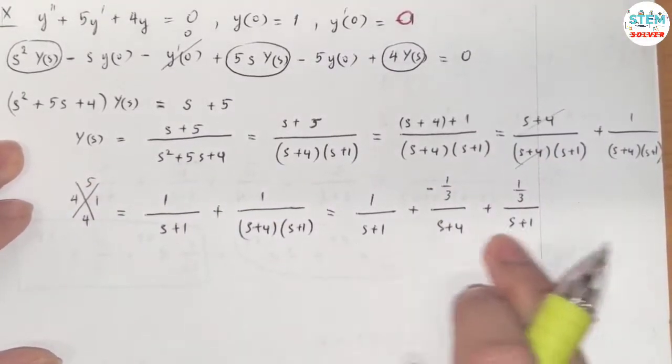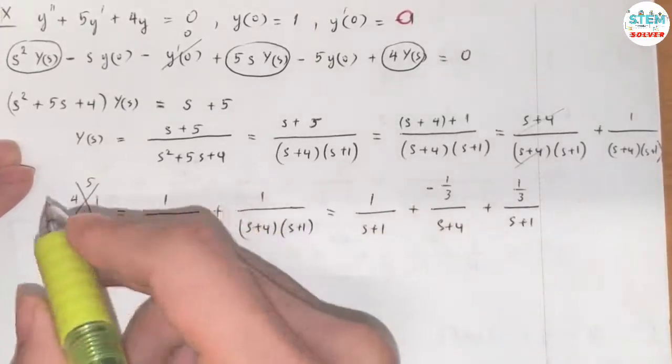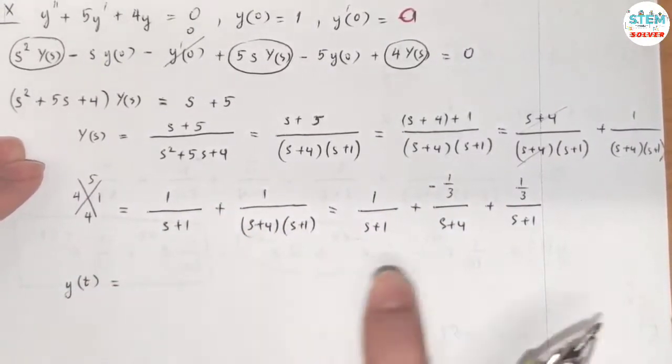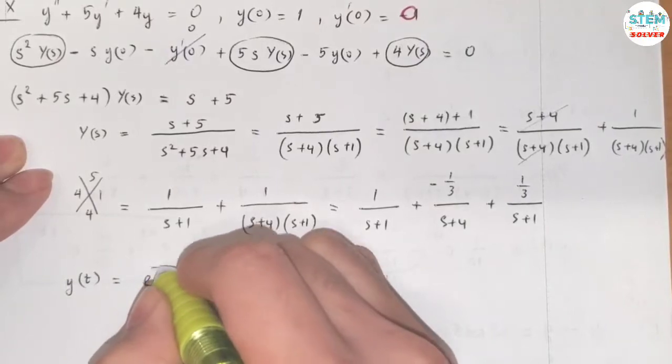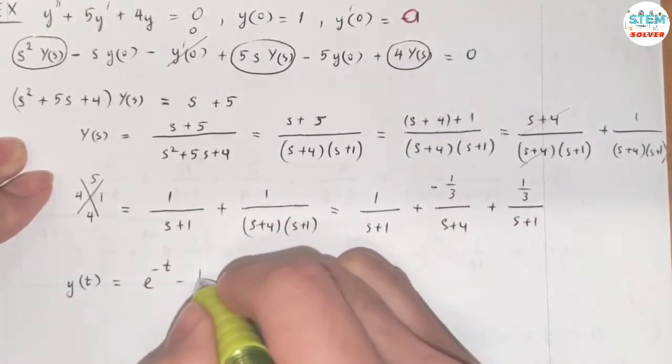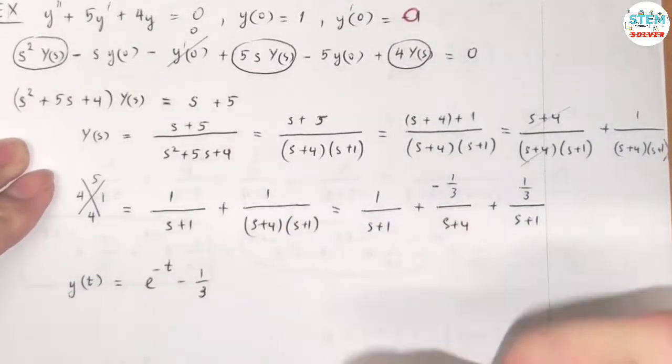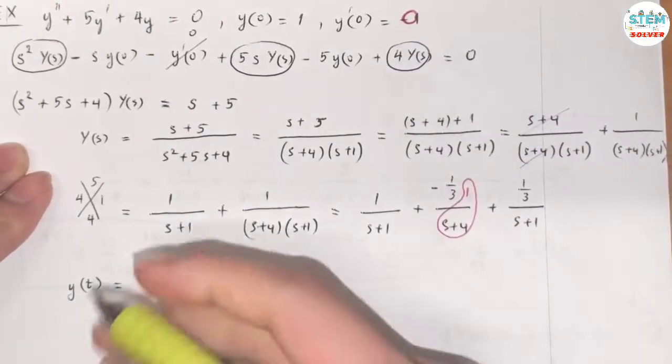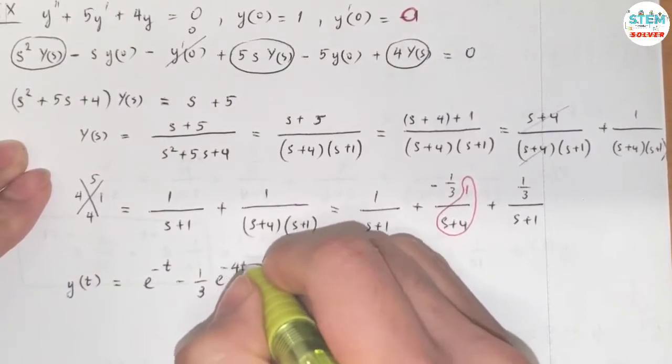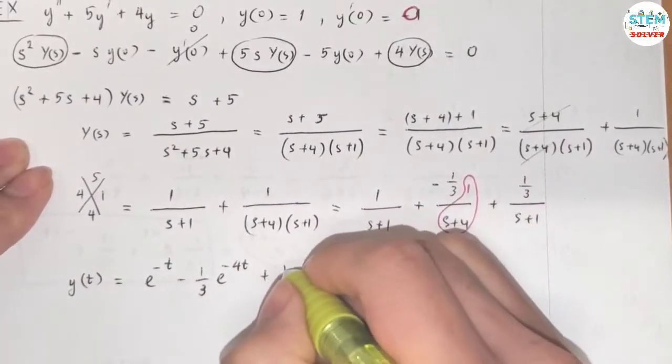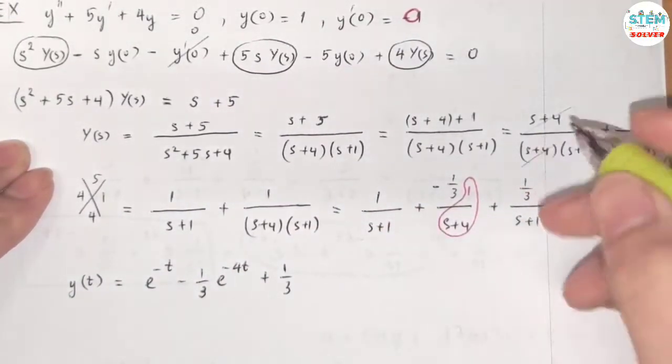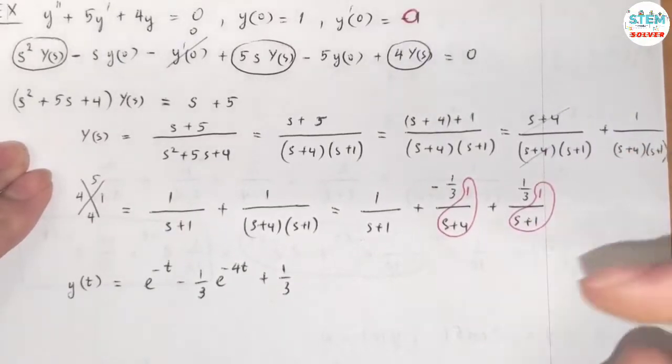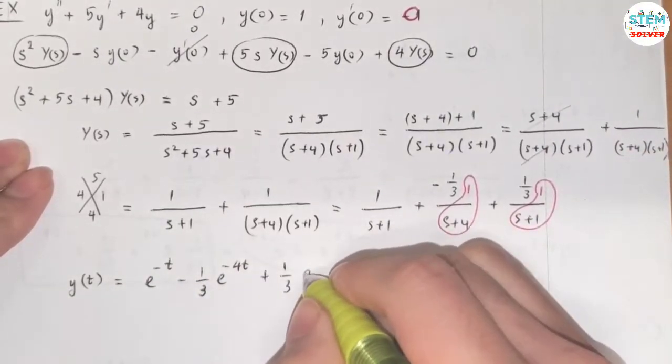Now take the inverse Laplace of everything on both sides. On the left side I have y(t), and on the right side I have 1 over (s + 1) equals e^(-t). Factor out negative one-third, and the inverse of 1 over (s + 4) equals e^(-4t). Factor out one-third, and the inverse of 1 over (s + 1) equals e^(-t).